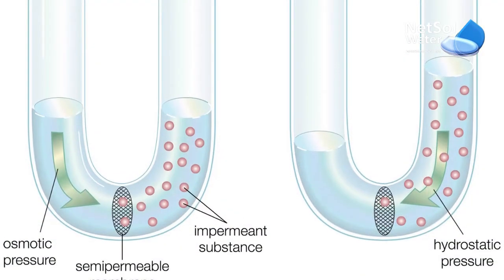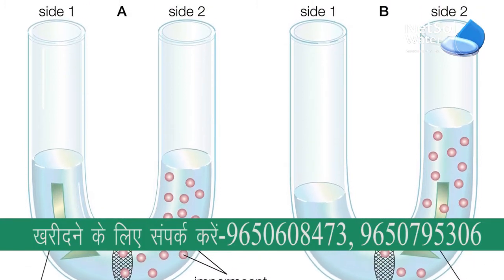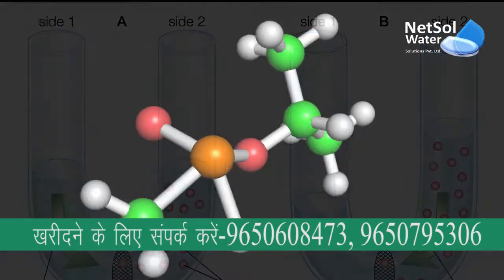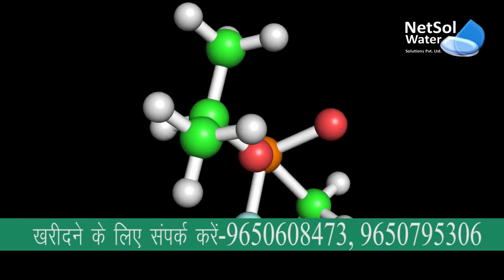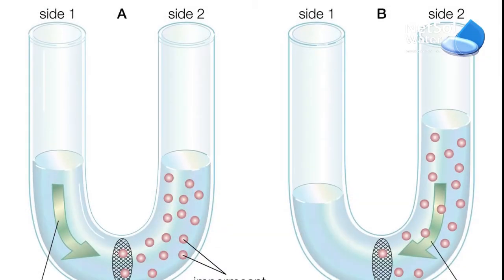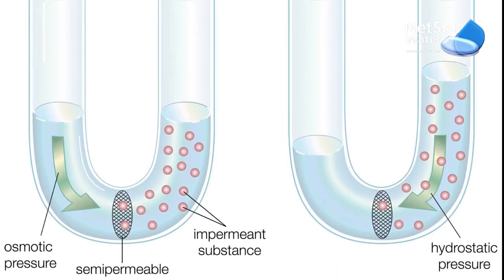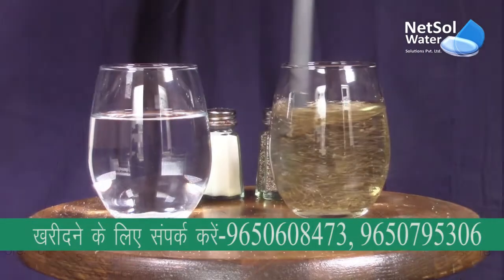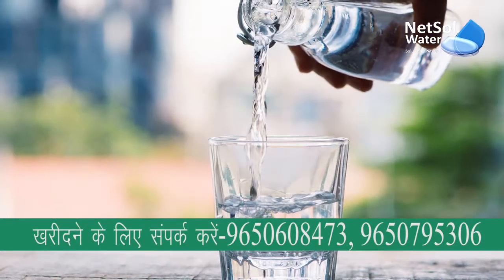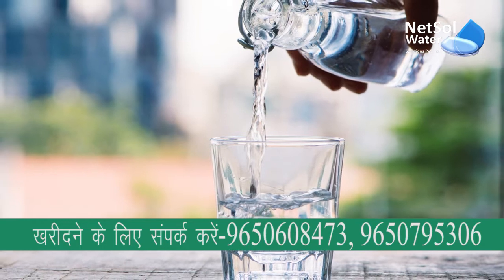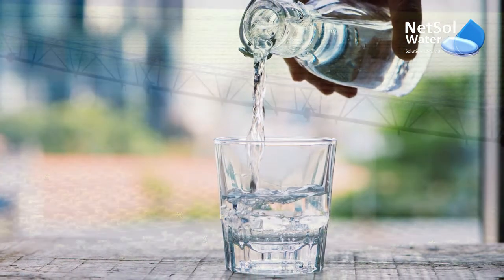Industrial RO plant mein khaare paani ko purify karni ke liye semi-permeable membrane ka istimal kia jata hai. External pressure is given to the water with high concentration of dissolved ions present in it. This external pressure pushes the water to flow in the opposite direction through this semi-permeable membrane. The dissolved ions and suspended solids are left behind. The water that passes through the semi-permeable membrane is known as permeate or well-treated product water.